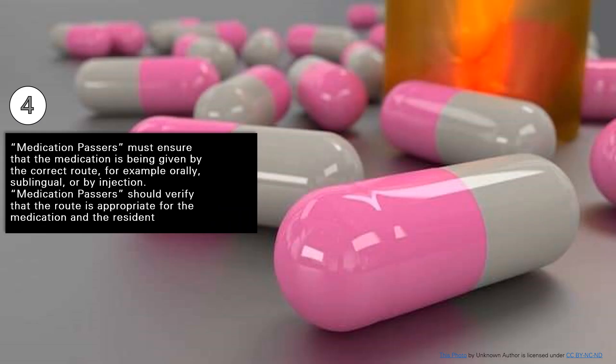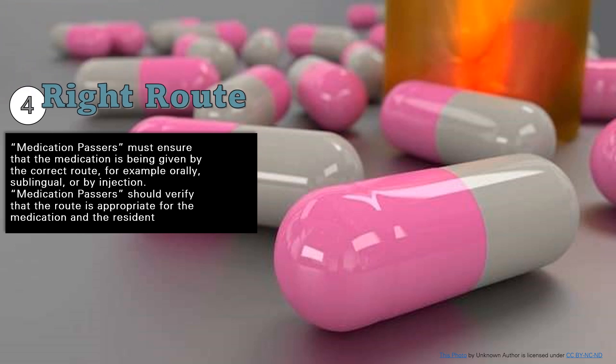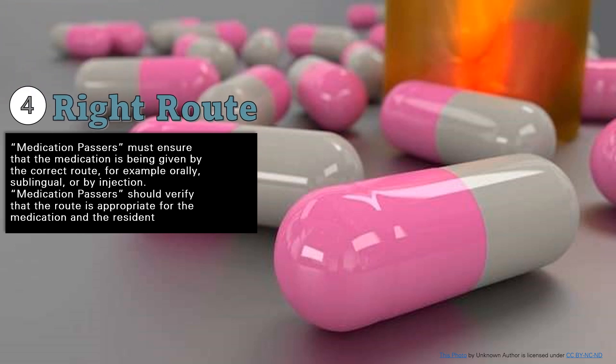Right route is the fourth right. Medication passers must ensure that the medication is being given by the correct route, e.g. orally, sublingual, or by injection. Medication passers should verify that the route is appropriate for the medication and the resident.